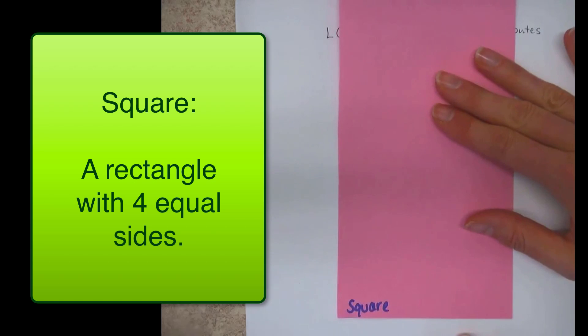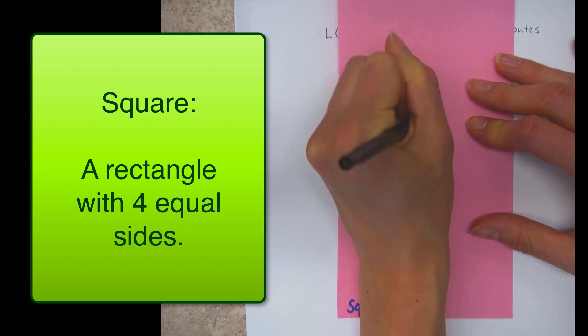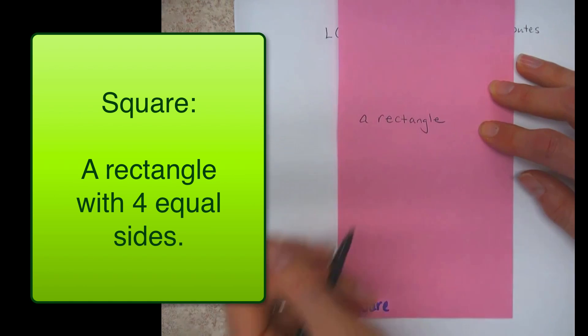Last one on this foldable is a rectangle with four equal sides. So here's a square. Rectangle with four equal sides. And you should have plenty of space for this one. Fill it up with a whole bunch of squares.